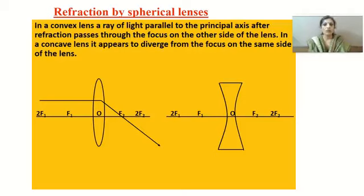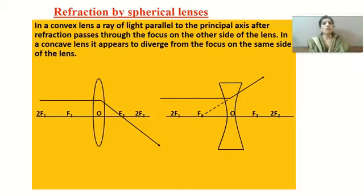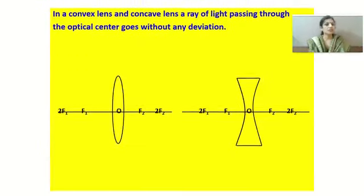In the case of a concave lens, when a ray of light is parallel to the principal axis, after refraction it diverges and appears as if it is emerging from focus F₁. This is the first rule we follow to draw the ray diagram for spherical lenses.